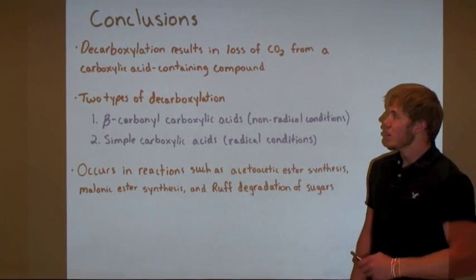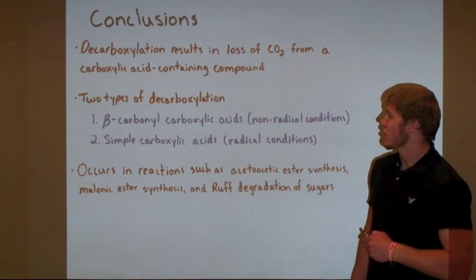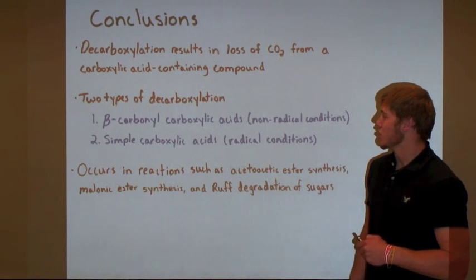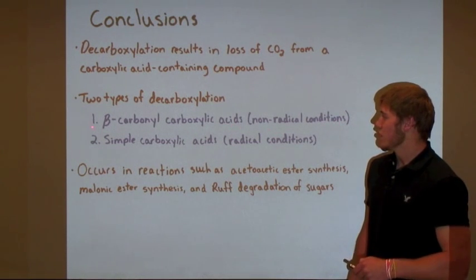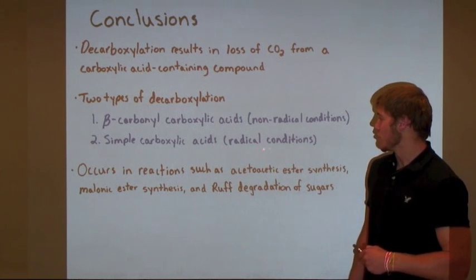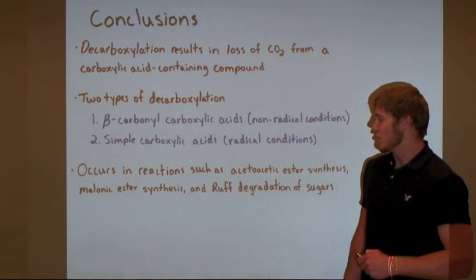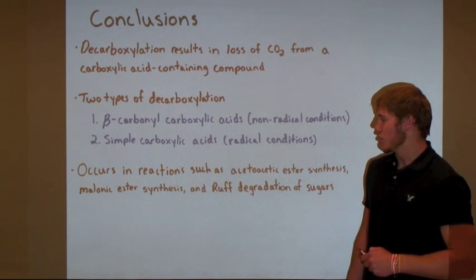In conclusion, decarboxylation results in the loss of carbon dioxide from a carboxylic acid containing compound. Once again, there are two instances when decarboxylation occurs: the first for beta-carbonyl carboxylic acids under non-radical conditions, and the second for simple carboxylic acids only under radical conditions. These decarboxylations occur in reactions such as acetoacetic ester synthesis, the very similar malonic ester synthesis, and the Ruff degradation of sugars, among others.